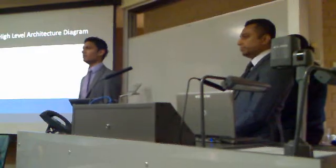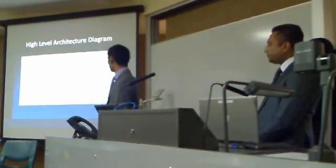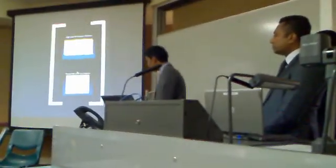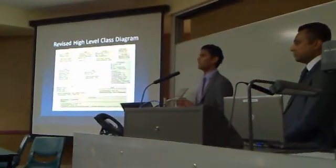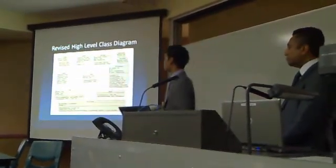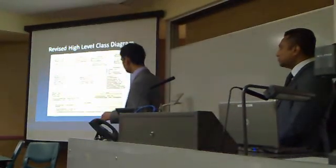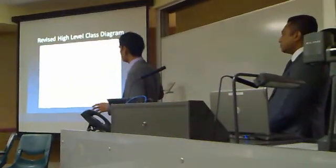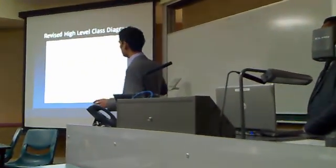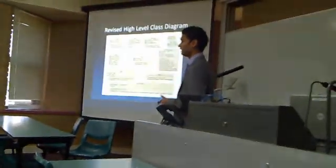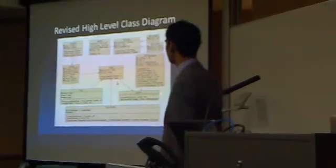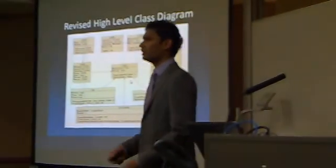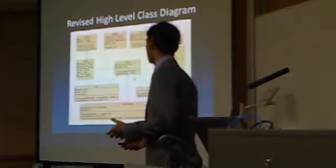Moving on from there, we get to the higher level class diagram. This explains how the application actually used information from the database. It had a favorites object, a building object, and a NodeXML parsing class which parsed XML data into actual usable information for the device. It used Dijkstra's algorithm to find the shortest path from point A to point B.